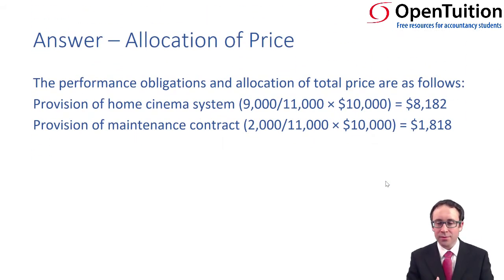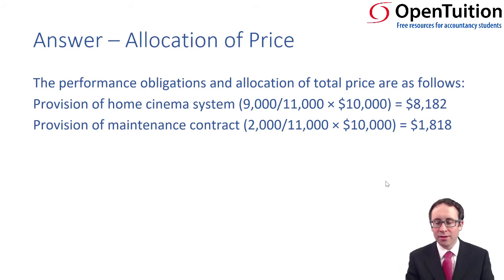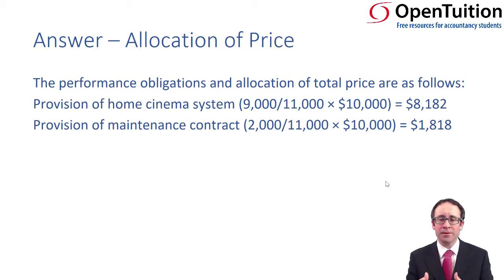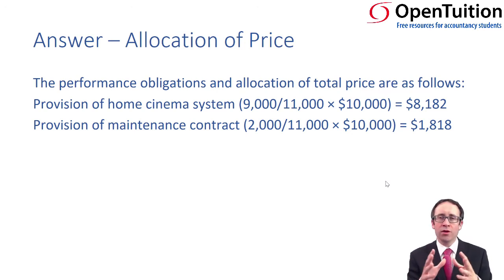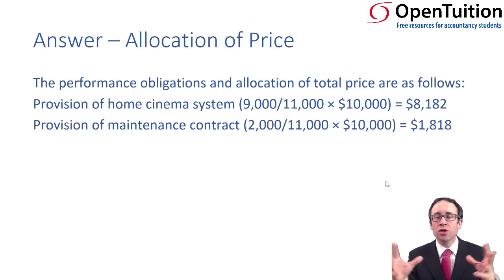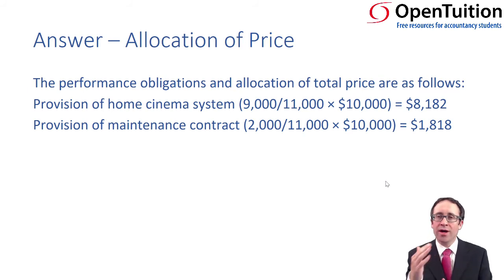Looking at the answer: for the home cinema system, $9,000 over $11,000 multiplied by $10,000 gives $8,182. For the maintenance, $2,000 over $11,000 multiplied by $10,000 gives $1,818. The key point is that you allocate the transaction price based on the stand-alone price of the goods and the stand-alone price of the services, total those stand-alone prices as the denominator, and apply it to the total transaction price.